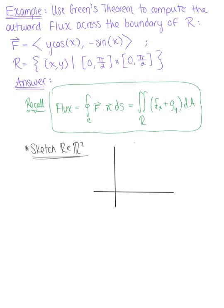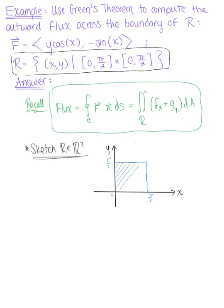So here our bounded region R is a square, and it's going from 0 to, say here is π/2 on our x-axis, and from 0 to π/2 on y. And the shaded region within this square is that region R, that connected and simply connected region R. We're moving in a counterclockwise direction here around this region.